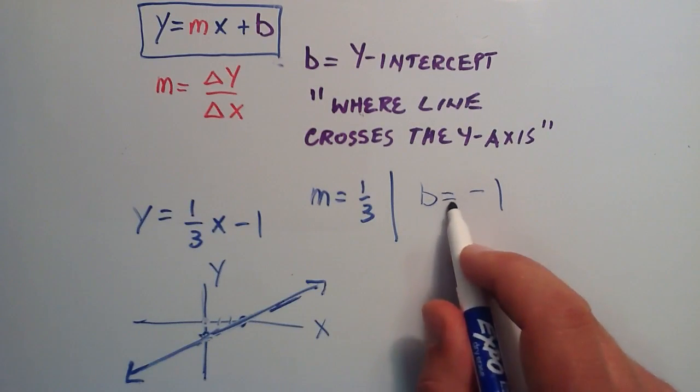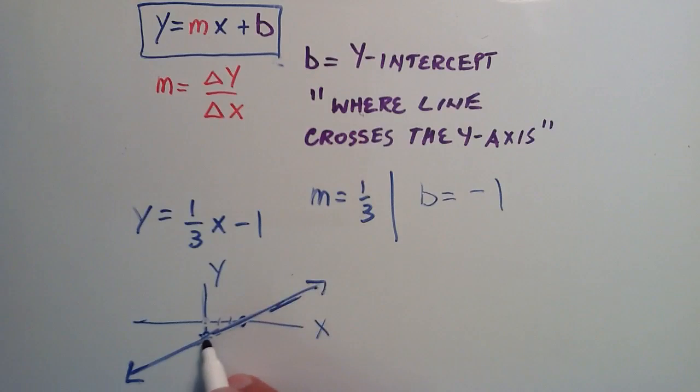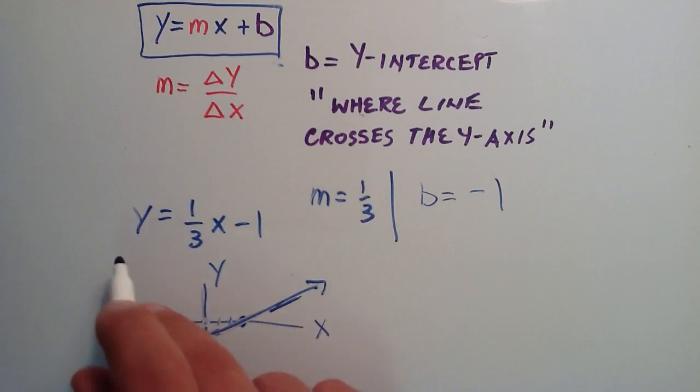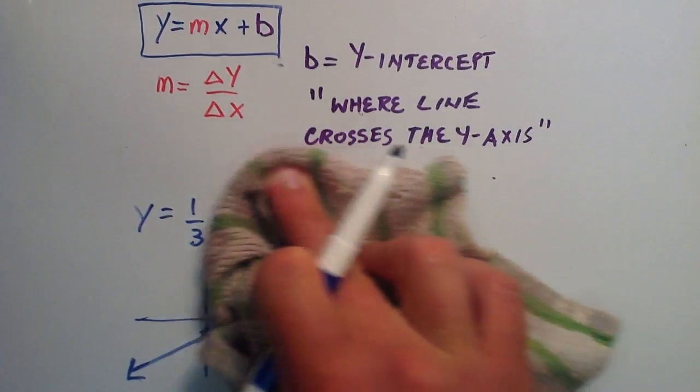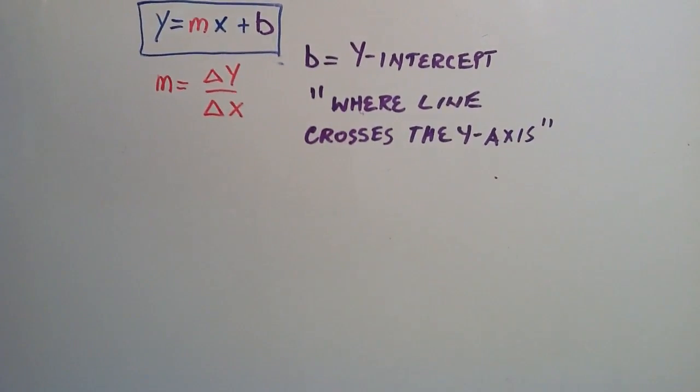We found the y-intercept. We found the slope. Plotted the two points. And we connected the dots. We found our line. So let's go ahead and try one more time so it's clear.